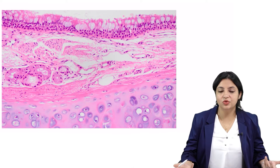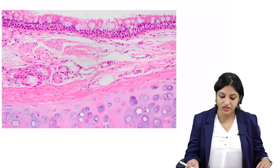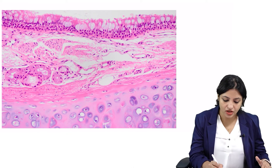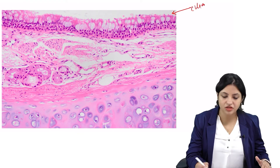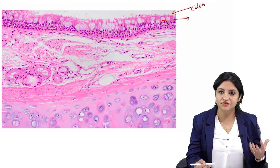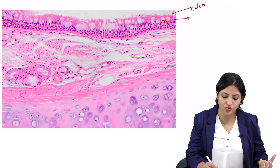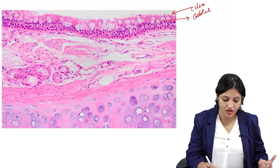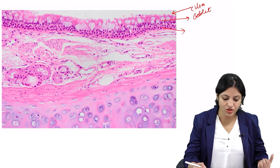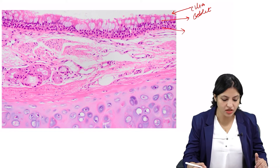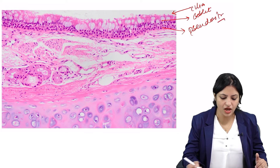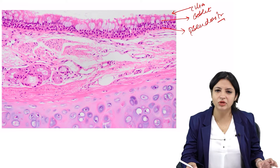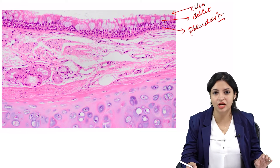Let's look at one histology section and try to identify it. I can see cilia on top, and some big glands filled with blue-colored mucus — could those be goblet cells? Looking at the epithelium, the nuclei appear at various levels, so it looks like a pseudostratified epithelium. So this is probably pseudostratified ciliated columnar epithelium with goblet cells.